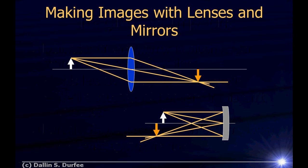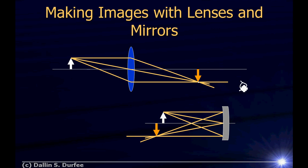When we make images with lenses and mirrors, the diagrams we draw look like this: I have a little arrow representing my object, rays of light come from it, they get bent by our lens or mirror, and they come back to a focus at some point where we draw another arrow representing our image. This means all the light coming from a point gets redirected back to a point, so if I put my eye here it looks like the light is coming from the image rather than the original object.